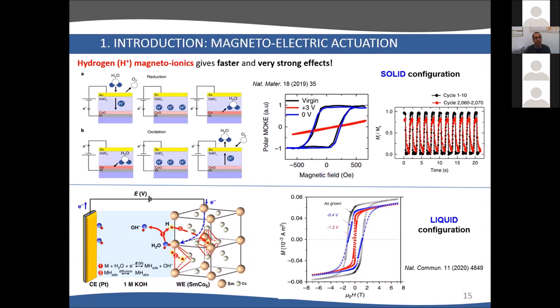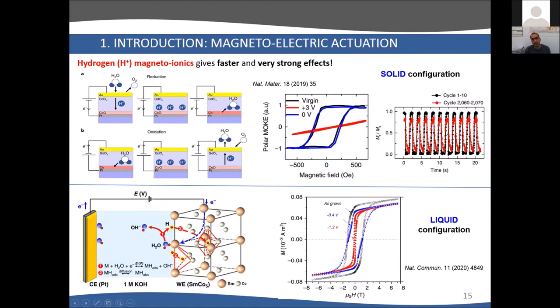More recently, in the last two years, it has been shown that besides oxygen, you can move hydrogen or protons, which gives faster and very strong effects compared to oxygen migration. The group of Geoffrey Beach were trying to do the cobalt with gadolinium oxide experiment. They noticed that if you do this in the presence of humidity, the effects are much larger. They attributed this to hydrolysis of water at the surface of gadolinium oxide. The hydrogen moves downwards towards cobalt oxide and you form metallic cobalt, changing the orientation from easy axis to hard axis. This is very fast with high cyclability because hydrogen is a very small atom. You can cycle many times, like 2000 times, as you can see here.